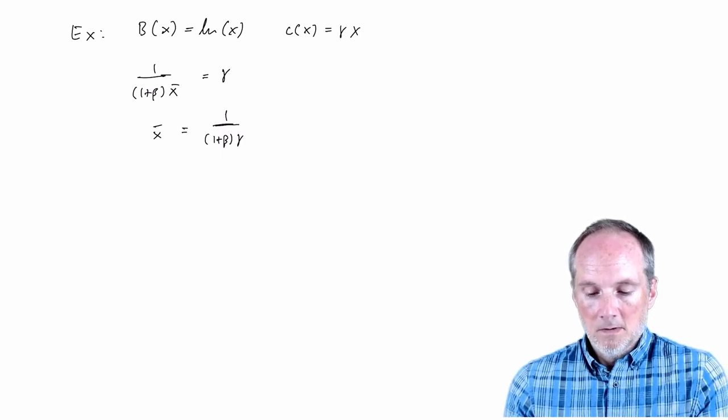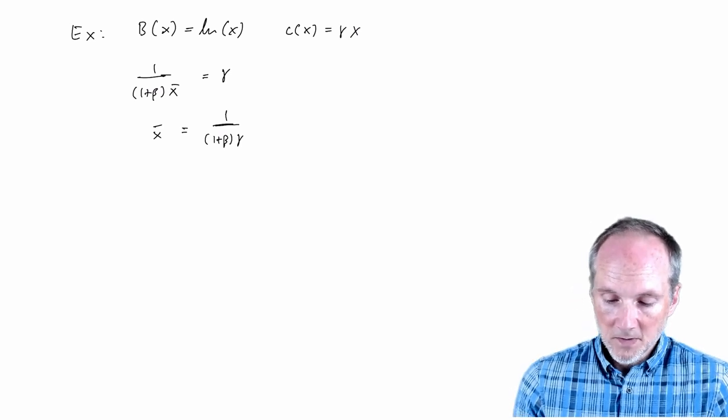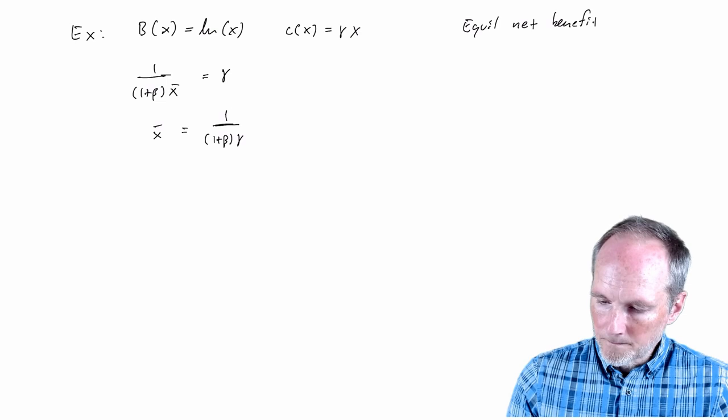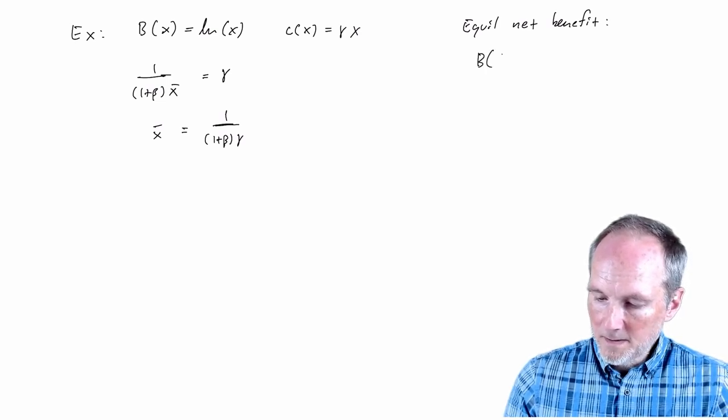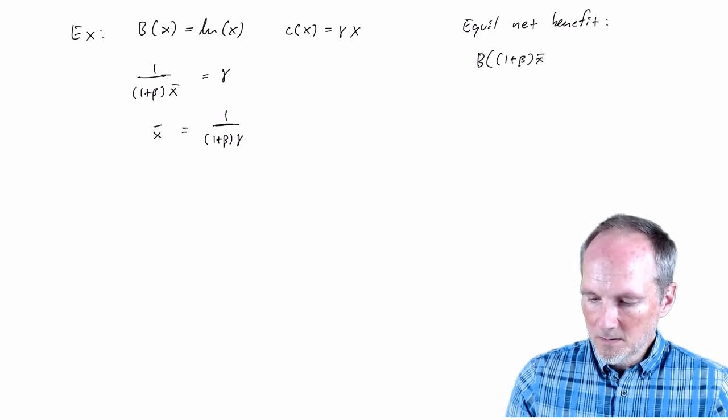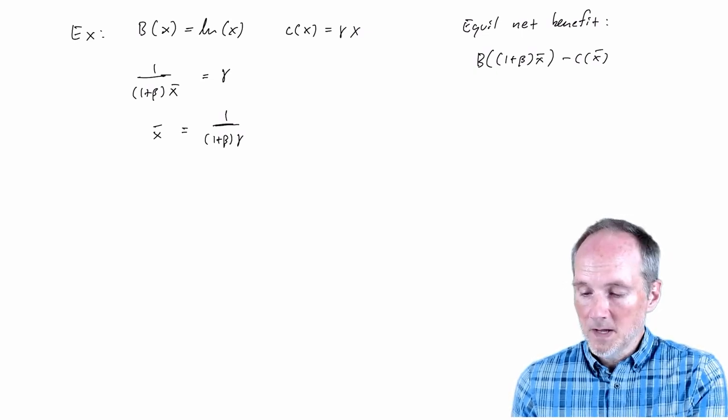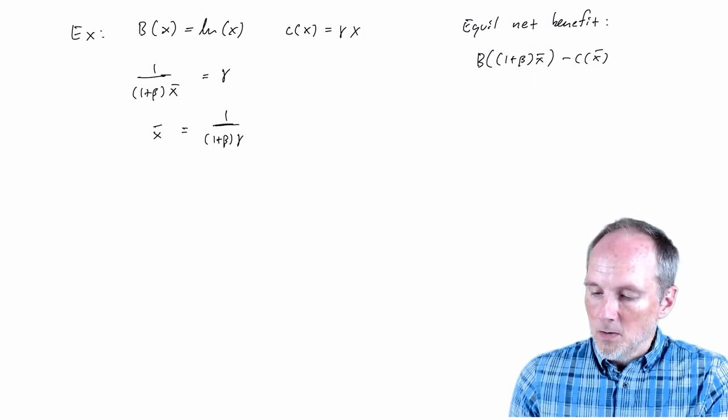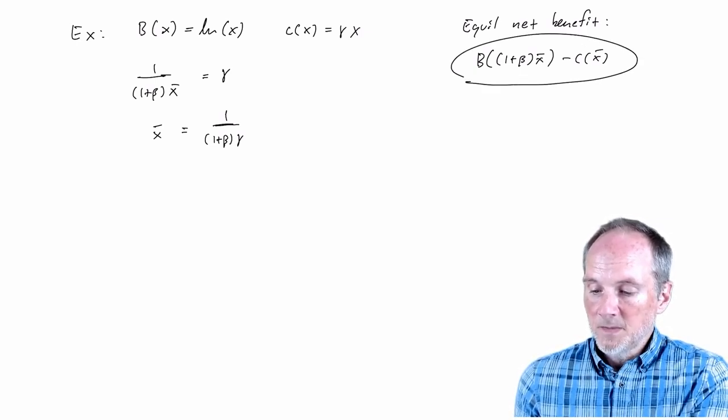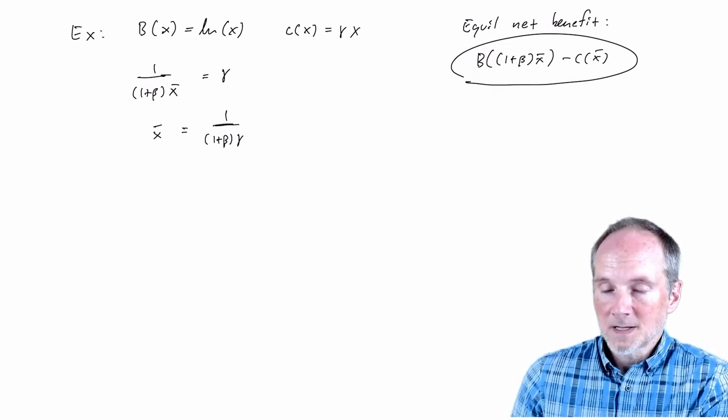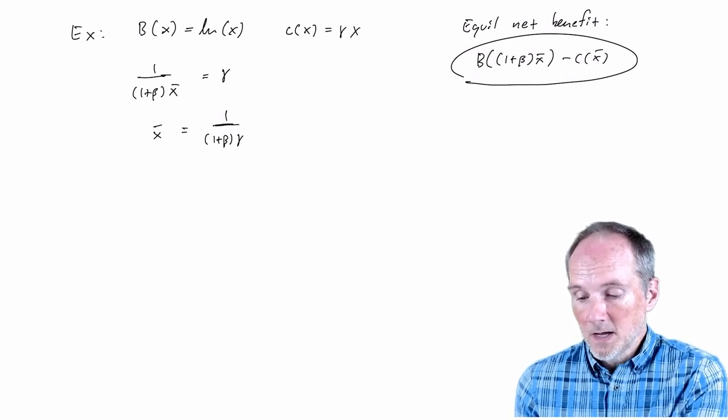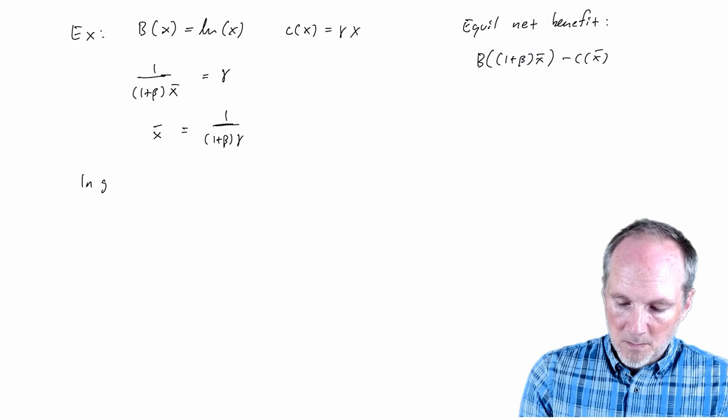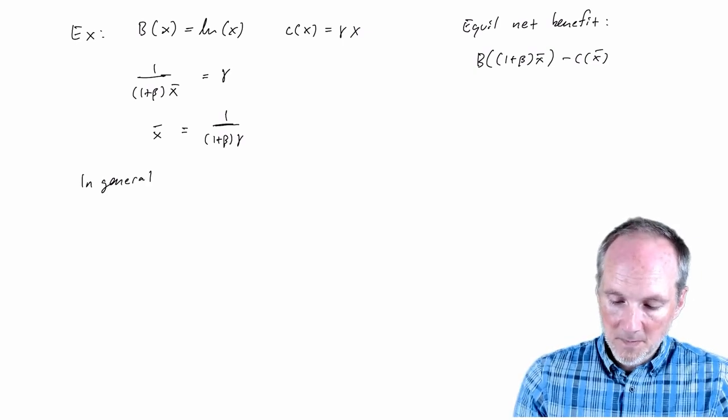So in general the equilibrium net benefit, that's just the benefit when I'm choosing X bar and you're choosing X bar minus the cost by choosing X bar. So that's the equilibrium net benefit in this public good provision problem. Well, so we can look at that equilibrium net benefit expression and say what happens if we increase X bar, if we increase the activity level of both of these guys. So we can just do that in a general way by taking the derivative of that with respect to X bar.